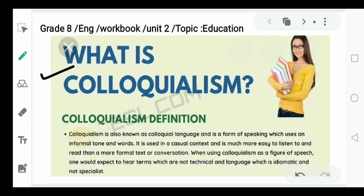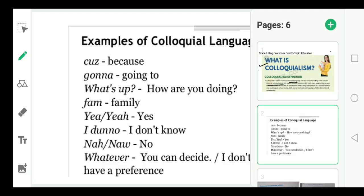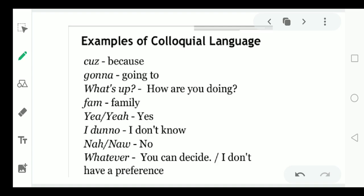I am going to tell you about colloquialism. The definition is, colloquialism is also known as colloquial language and is a form of speaking which uses an informal tone and words. Keep it in your mind to be informal and very casual. It is used in a casual context and is much more easy to listen and to read than more formal context or conversation. I am going to give you some examples of colloquialism like, because we can pronounce it as cause and going to will be pronounced as gonna.